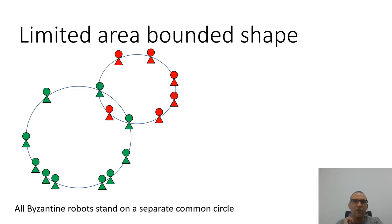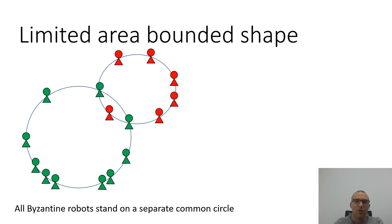In general, assuming the number of points needed to define a function f is x, the Byzantine robots can choose x minus 1 honest robots to define a new shape. So we want n minus t to be greater than t plus x minus 1, meaning n is greater than 2t plus x minus 1. The total number of all possible groups of x robots out of n robots is n choose x, implying polynomial time complexity. If the robots cannot find the valid circle, they may use a default circle and move to it to continue their task — for example, x² + y² = r², where r is a predefined global value.